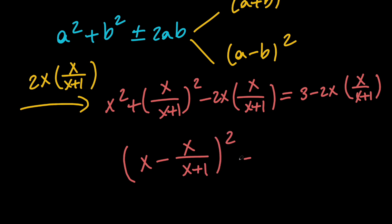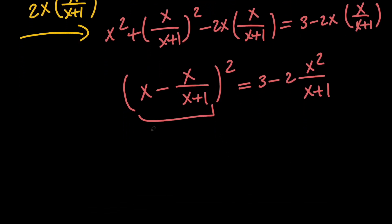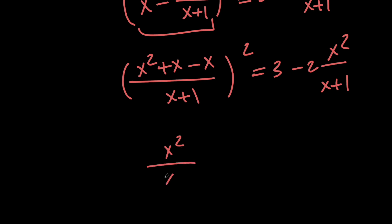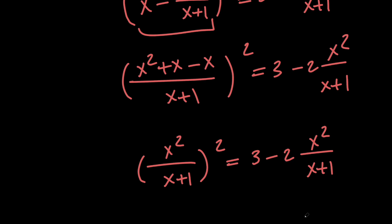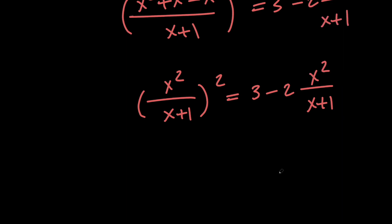The right hand side simplifies to 3 minus 2 times x squared over x plus 1. Next, let's get a common denominator for these two. We get x plus 1 in the denominator, and x squared plus x minus x on the top. Then we can simplify the left hand side into x squared over x plus 1, all squared, and it equals 3 minus 2 times x squared over x plus 1.